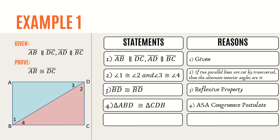So triangle ABD is congruent to triangle CDB by the ASA congruence postulate. And since the two triangles are congruent, we can now prove that side AB is congruent to side DC by the corresponding parts of congruent triangles are congruent, or CPCTC. The final reason is always CPCTC when proving statements on triangle congruence using the two-column proof.